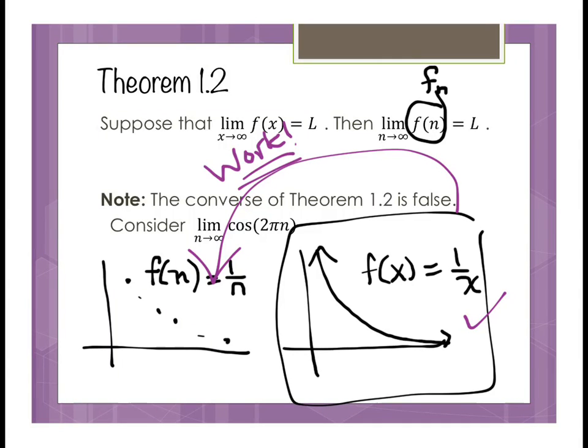Last time we started working on section 9.1, and this time we're going to finish up. I'd like to start back at Theorem 1.2 where we had actually started before. We talked about this theorem that said that the limit of f(x) as x approaches infinity equals L, and if that happens, then the limit of the corresponding sequence is true and works to be that same value for L as well.